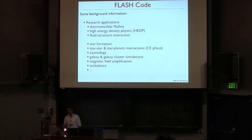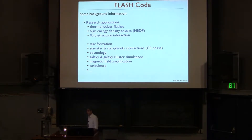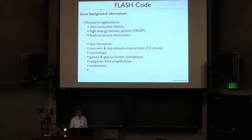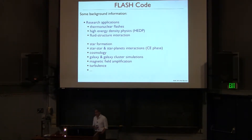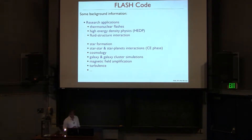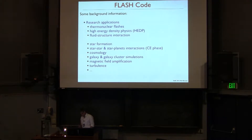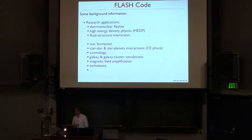The main focus, initially, and that's why the name as well, was on studying thermonuclear flashes — essentially explosions on the surface of neutron stars and white dwarfs — extending to high energy density physics. But the FLASH code, because it is a multi-physics, multi-purpose code, is very widely used by many other groups, including star formation, planet dynamics, cosmology, galaxy formation, galaxy merging, magnetic field amplification, and turbulence.